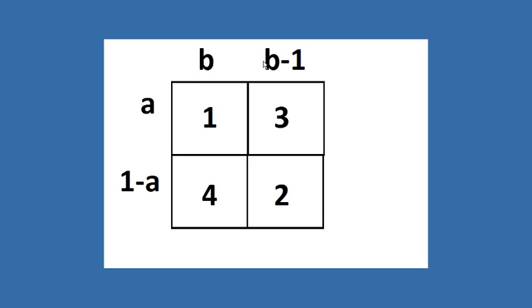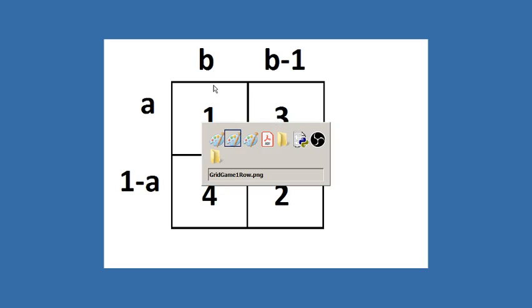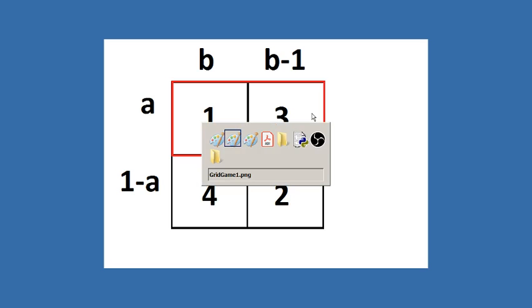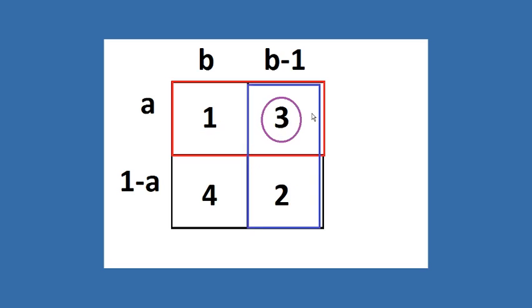So they don't see each other's choice, so maybe A chooses row 1, and then B doesn't know that A has chosen row 1, and maybe selects row 2. And then where the two meet, the row and column where they meet, that's the score. So for that particular round where player 1 chose row 1 and player 2 chose column 2, the payout would be 3.